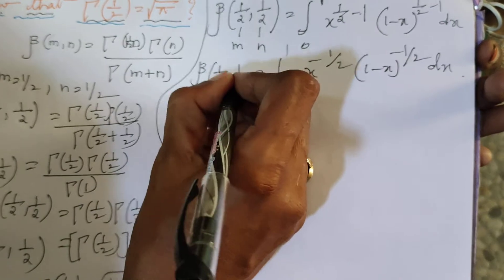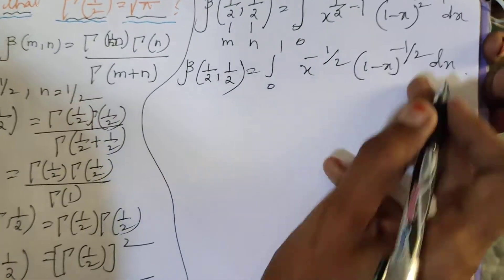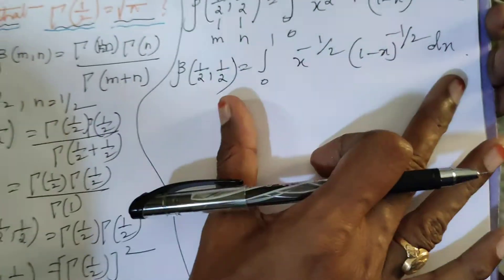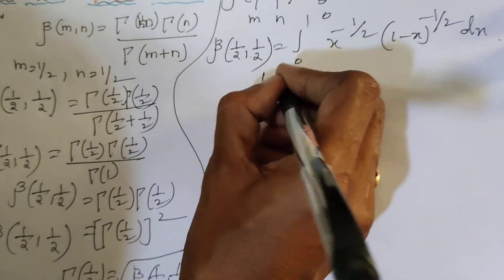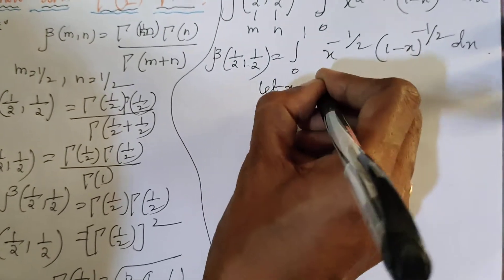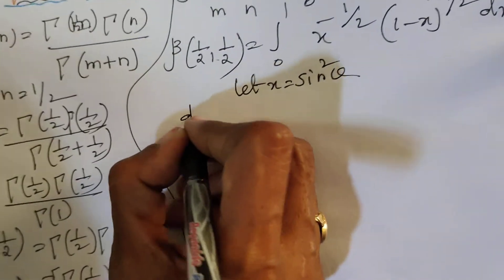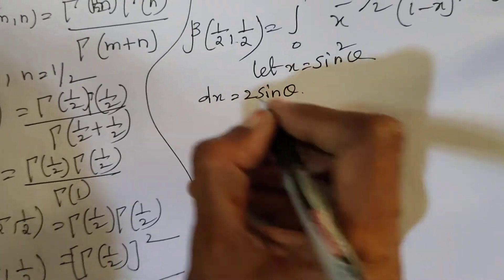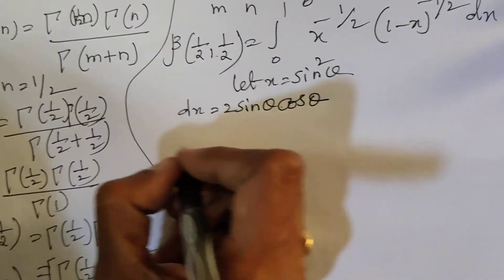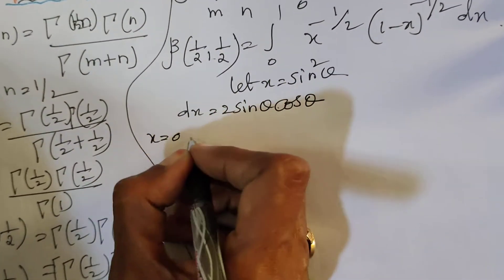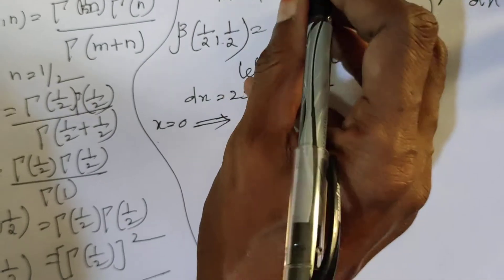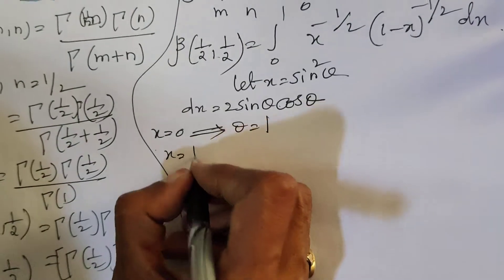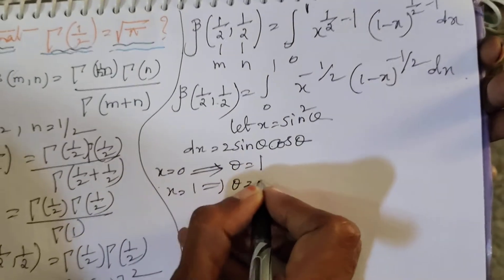To solve this integral, we use the substitution x equals sin²θ. Differentiating gives dx equals 2 sin θ cos θ dθ. Changing the limits: when x equals 0, θ equals 0; when x equals 1, θ equals π/2.